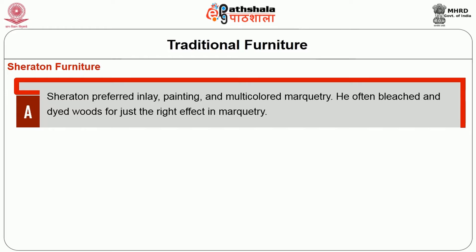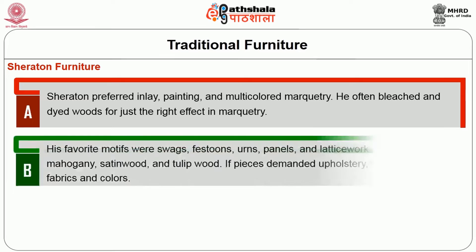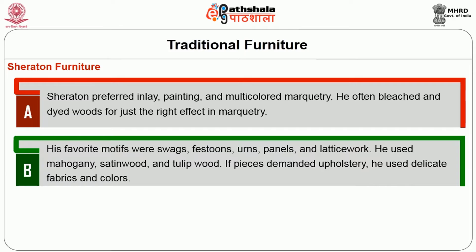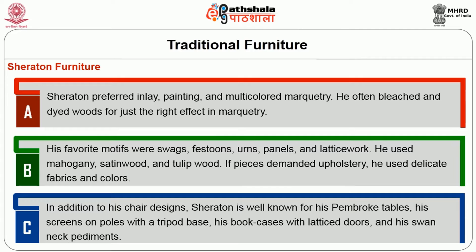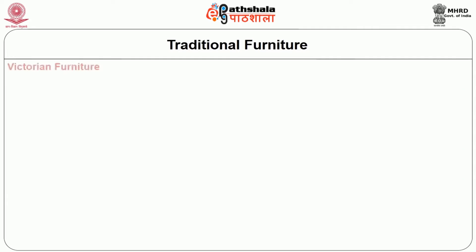Sheraton preferred inlay, painting, and multicolored marquetry; he often bleached and dyed woods for just the right effect. His favorite motifs were swags, festoons, urns, panels, and lattice work. He used mahogany, satinwood, and tulip wood. If pieces demanded upholstery, he used delicate fabrics and colors. In addition to his chair designs, Sheraton is well known for his Pembroke tables, screens on poles with a tripod base, bookcases with lattice doors, and his swan neck pediments.